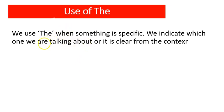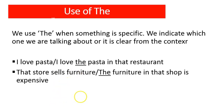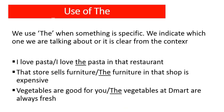Now for the use of 'the': we use 'the' when something is specific, when we indicate which one we are talking about, or it is clear from the context. For example, 'I love pasta' — pasta here is general. But 'I love the pasta in that restaurant' — you are referring to the pasta in a particular restaurant, hence 'the.' Similarly, 'That store sells furniture' is general, but 'The furniture in that shop is very expensive' refers to the particular furniture in that shop. Hence 'the.' Likewise, 'Vegetables are good for you' is general, but 'The vegetables in DMART are always fresh' is specific.